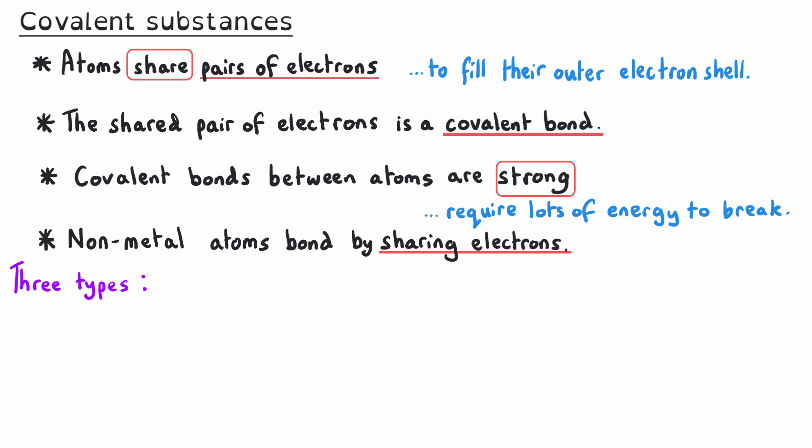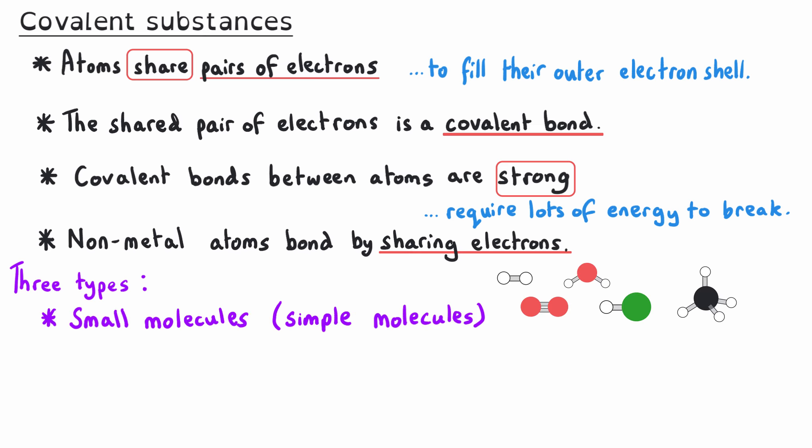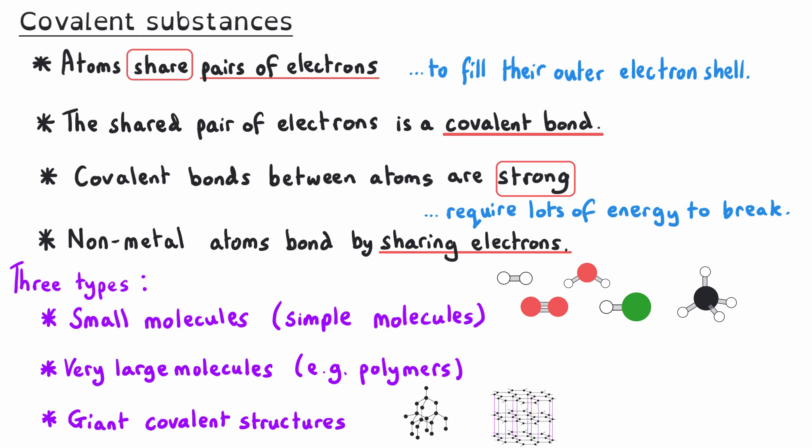There are three different types of covalently bonded substances that you need to know about. There are small molecules, sometimes referred to as simple molecules; very large molecules, for instance things called polymers; and also giant covalent structures.